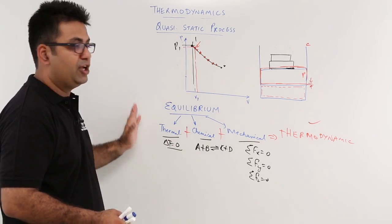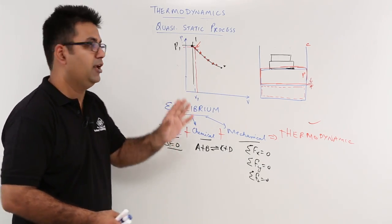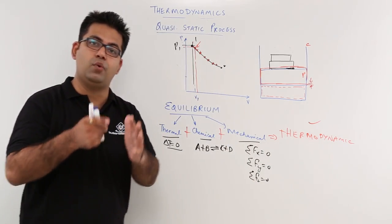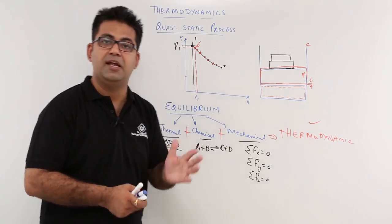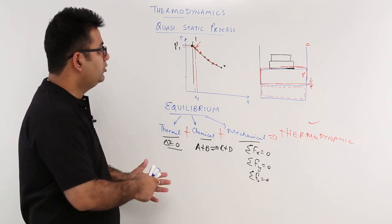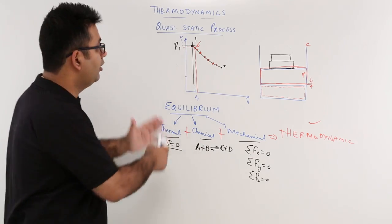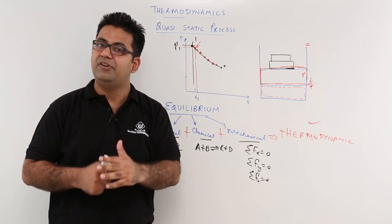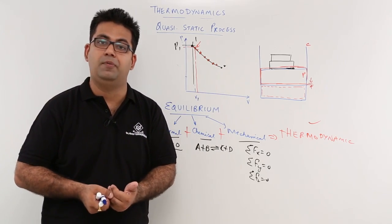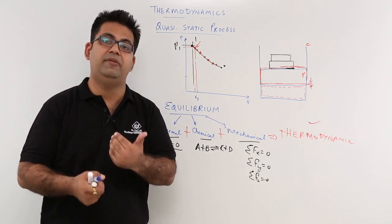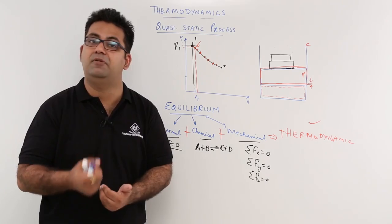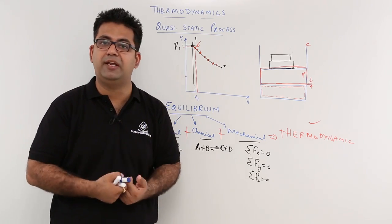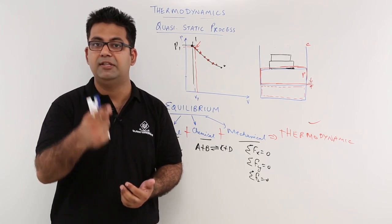So I hope you understood the concept of the quasi-static process and, more importantly, what is equilibrium and the concept of thermodynamic equilibrium — the coexistence of thermal, chemical, and mechanical equilibrium in a system. This brings us to the end of the introductory part of thermodynamics. In the next video, we go to the zeroth law of thermodynamics, which forms the basis of temperature measurement.